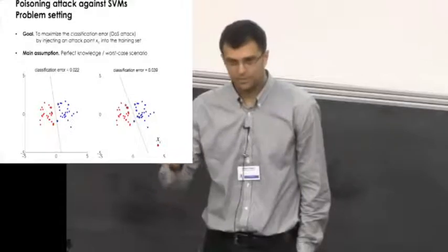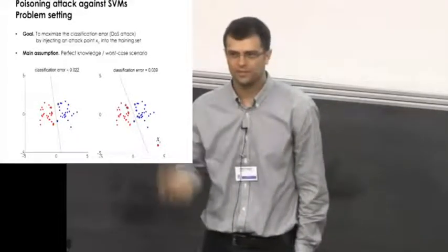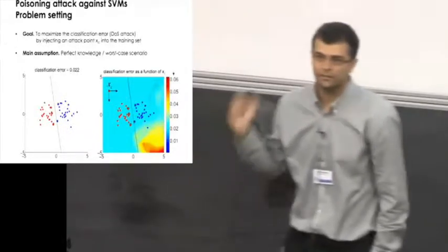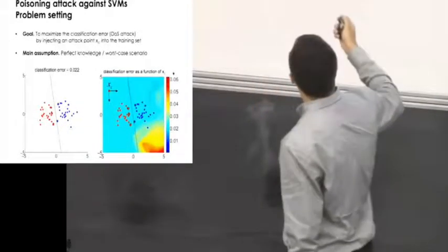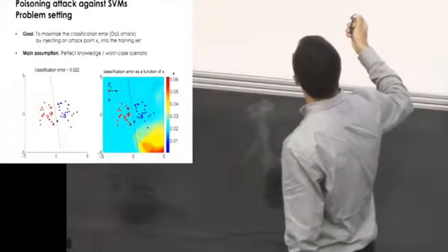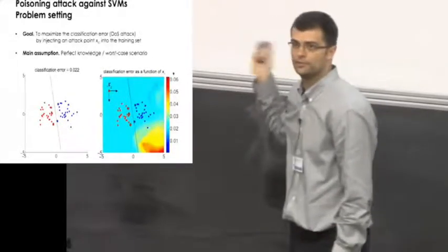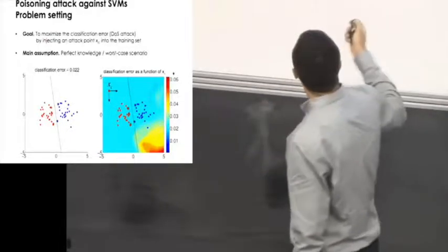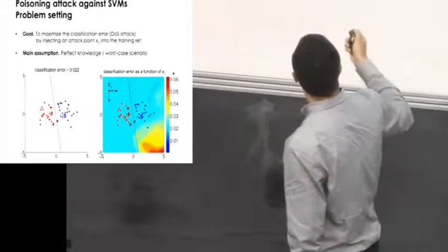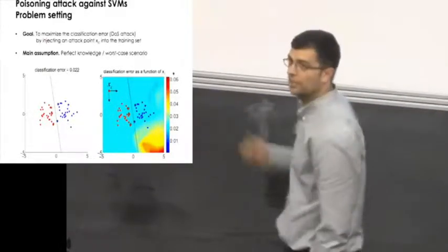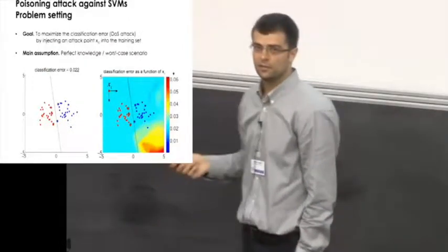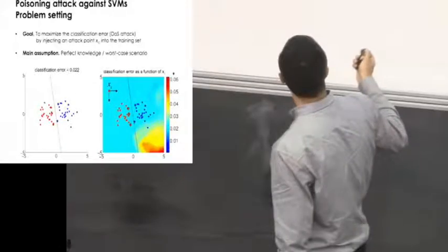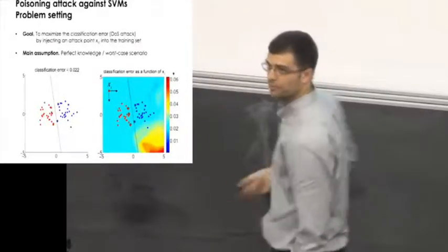Since the question is where to place this point to maximize that function, we can think of that point as a free variable, and we can estimate the classification error for each location of the attack point, and show it in color so that we build basically this color plot. This is basically the function that we aim to maximize, and by looking at this plot, for example, we discover that this is the best location where to put the attack point.